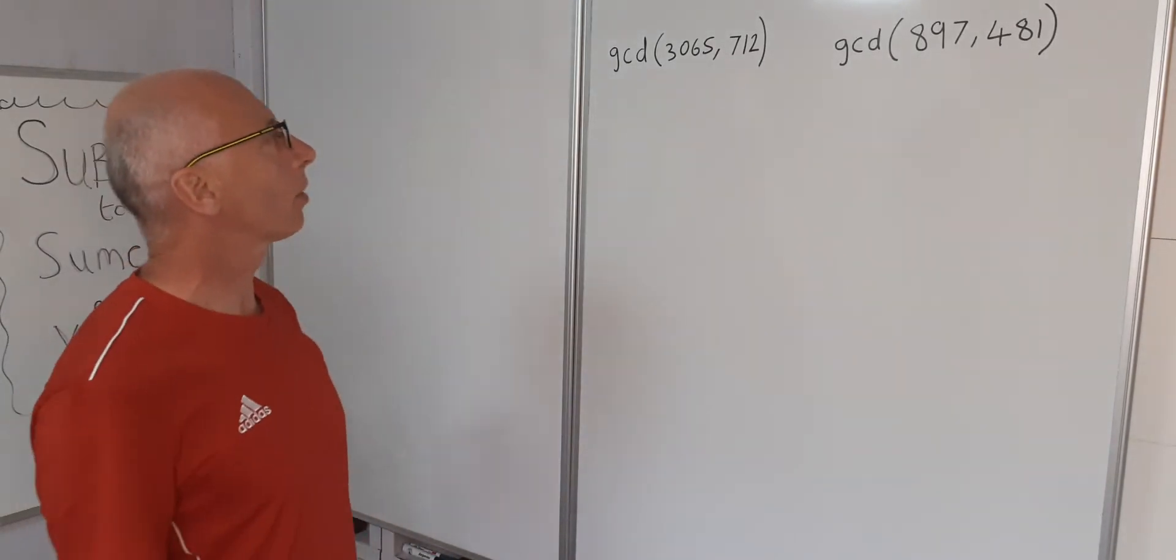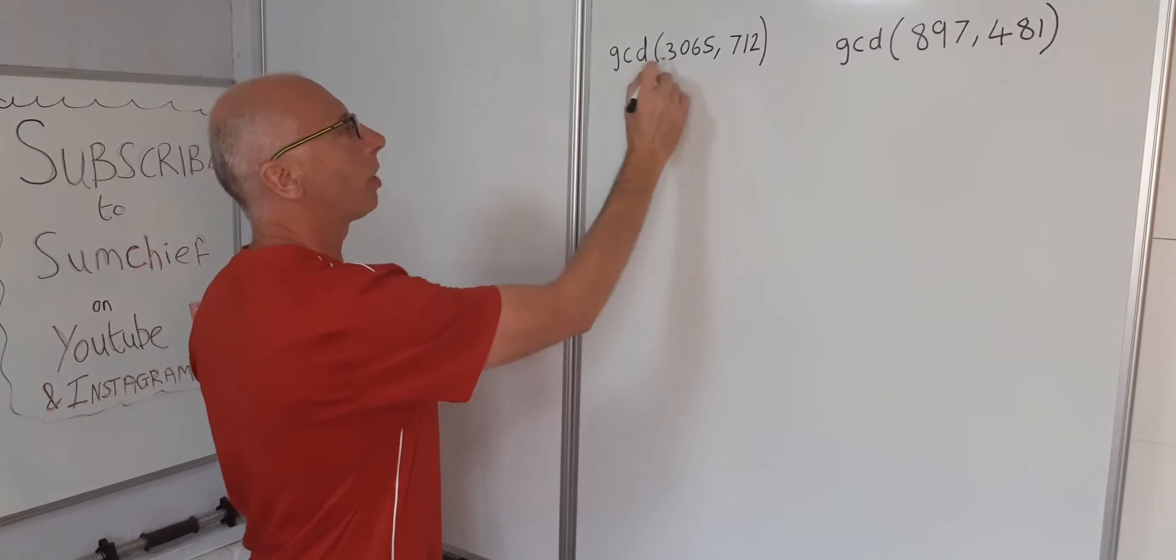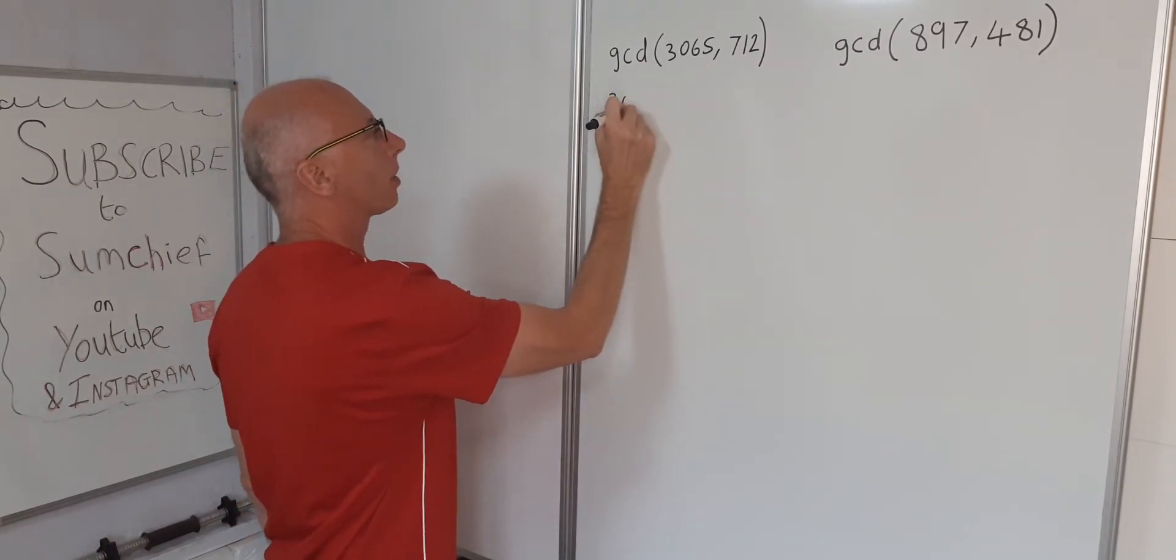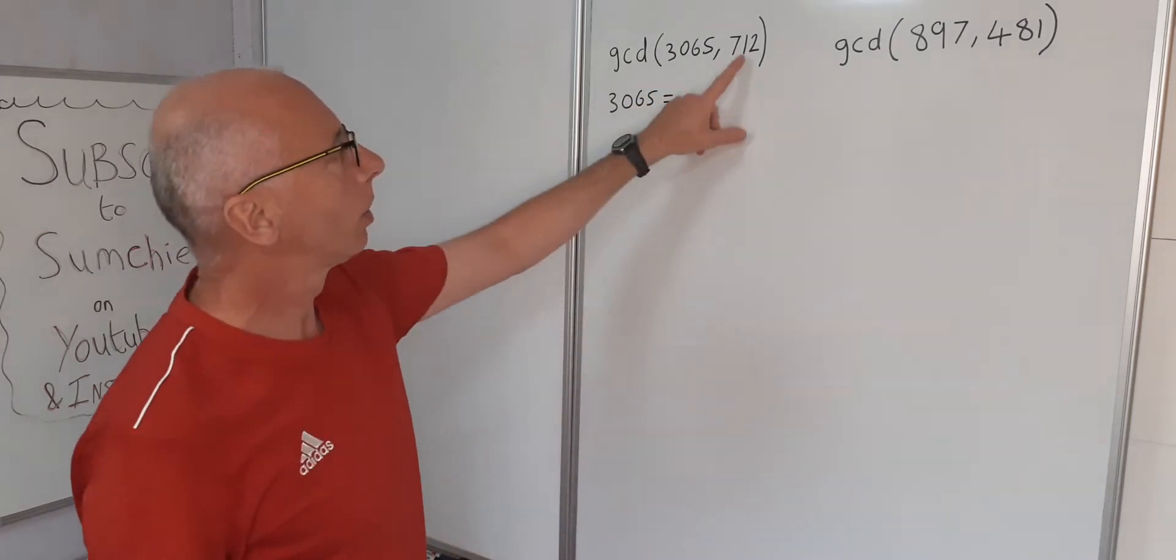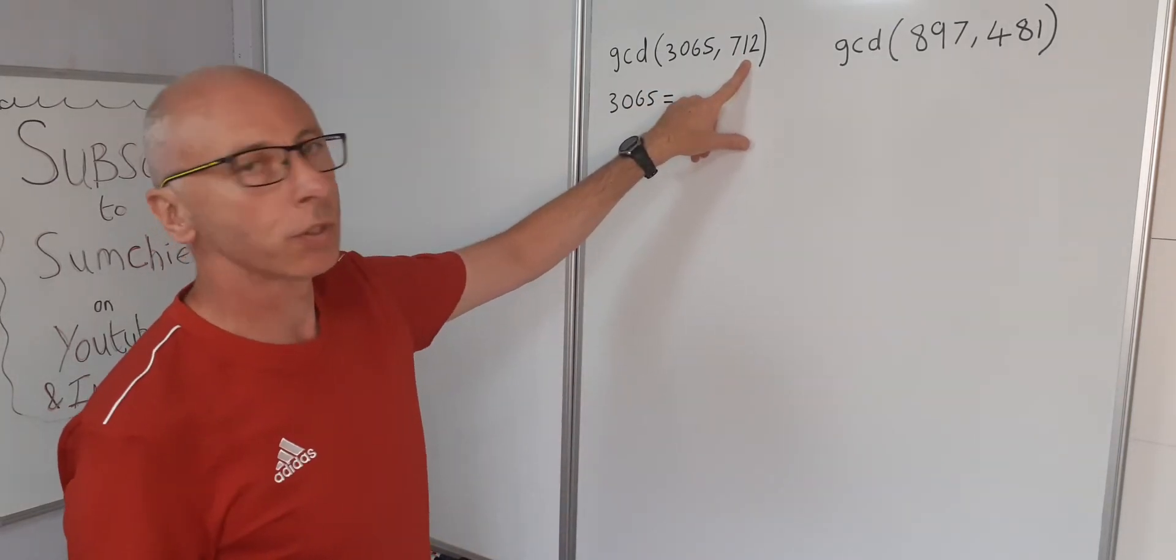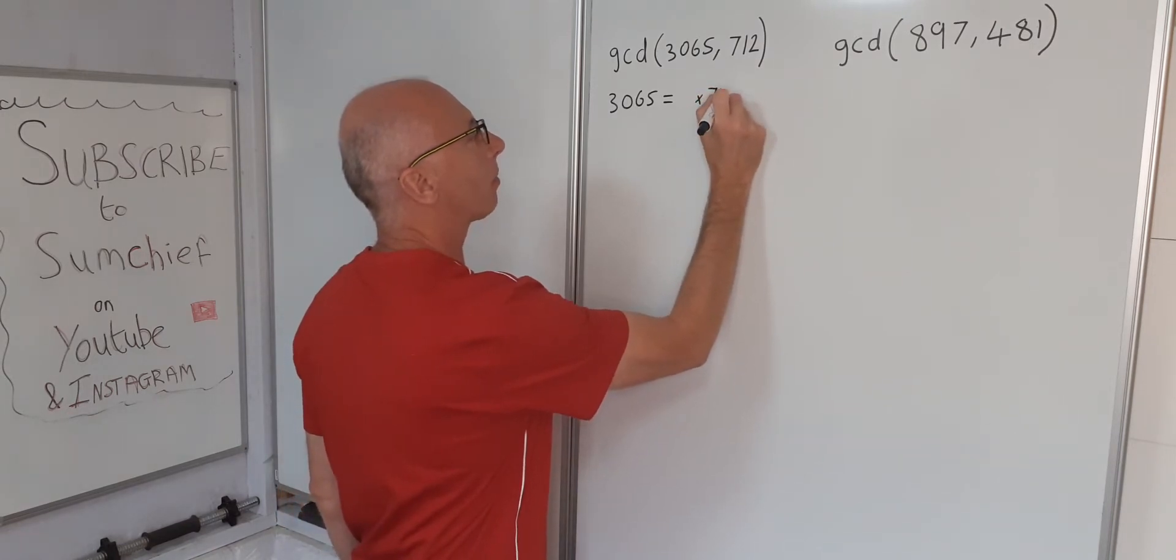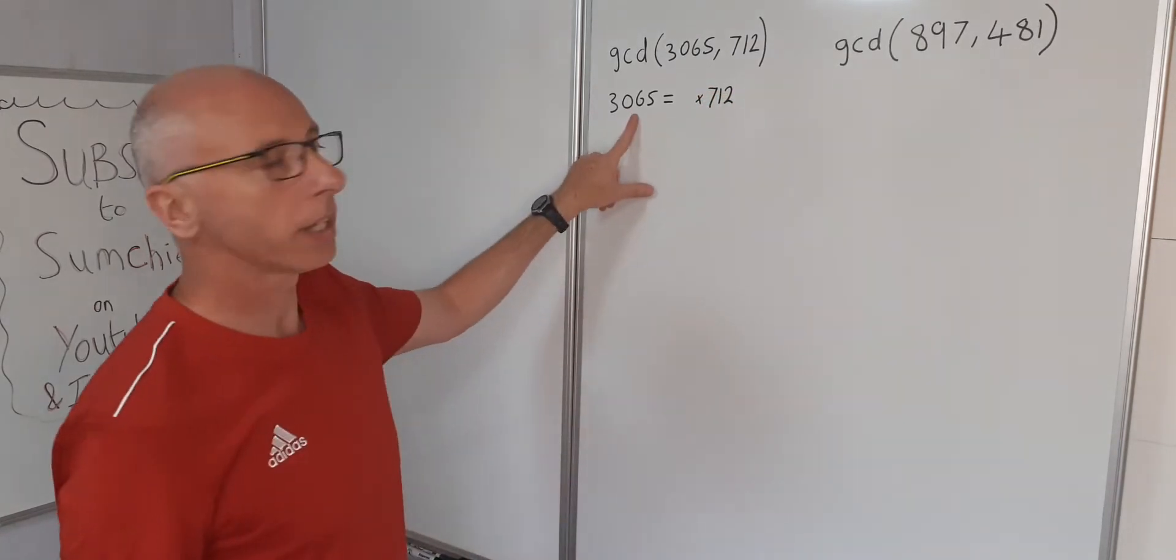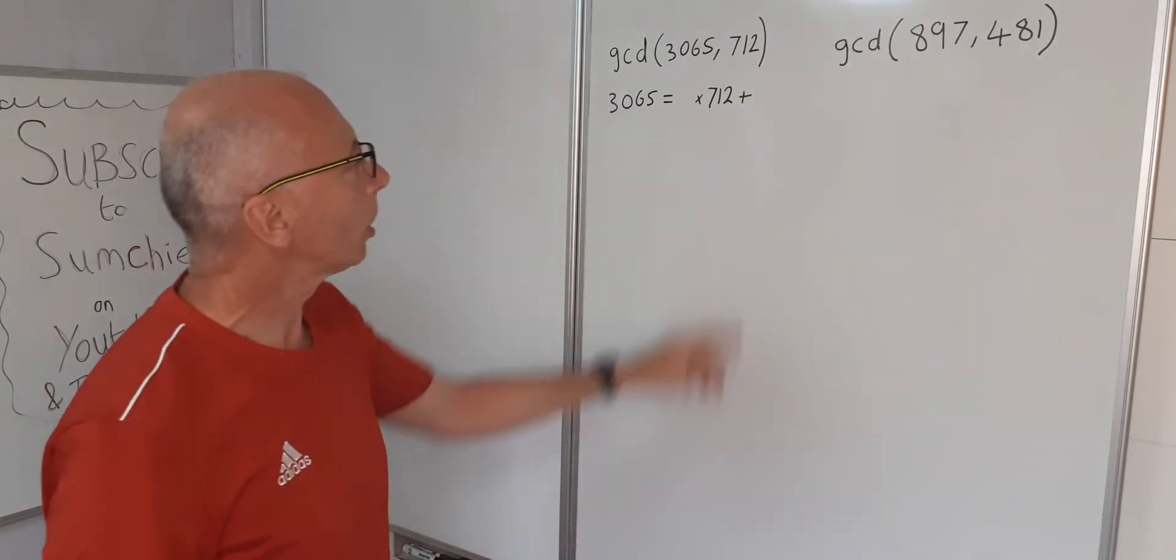So Euclid's algorithm, how does it work? First of all, we write the largest number 3065 and then make that equal to something times 712. We're going to multiply something by 712 to get close to this, which will give us a remainder that we add on here.